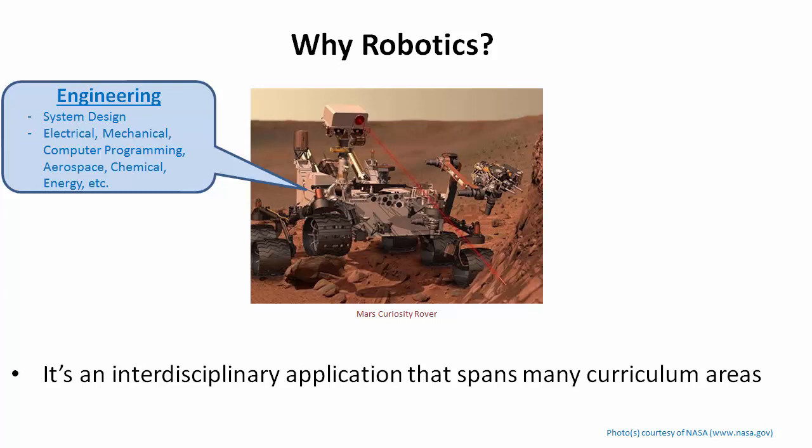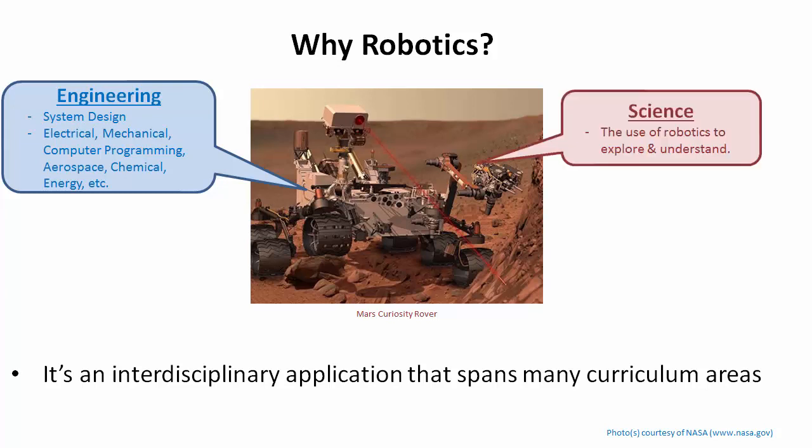Robotics is becoming one of the more popular platforms to teach all of the principles of engineering. You also have science. Robotics can be used to teach science — not necessarily through the design of the robot itself, but through the use of robotics to explore and understand, going places that humans can't go right now, such as the surface of Mars or the deepest parts of the ocean. What can we use robotics to observe, and how can robotics explain what's going on?